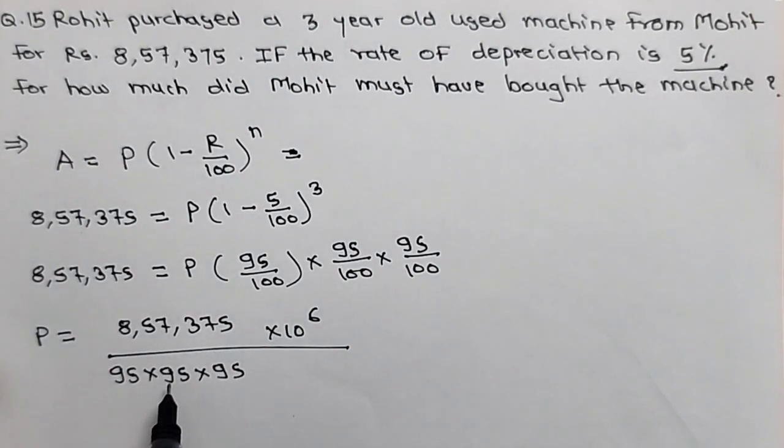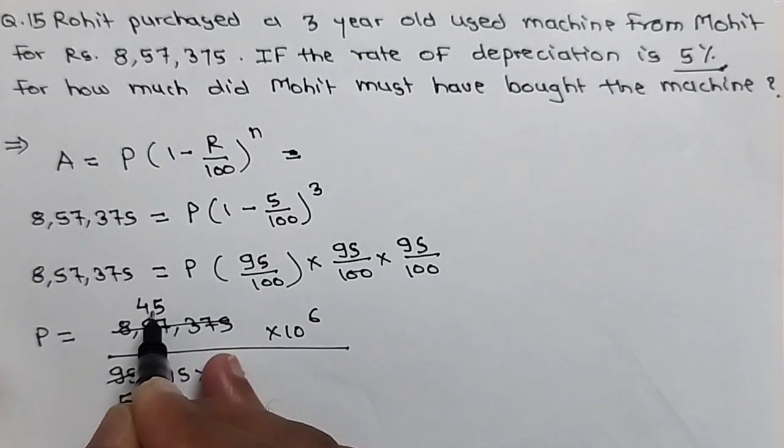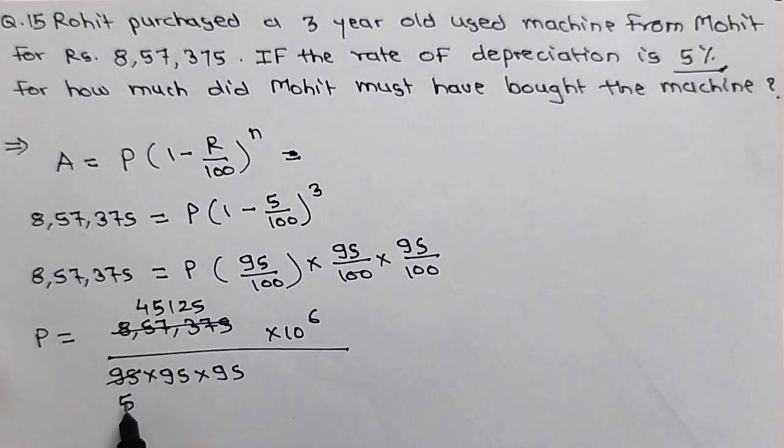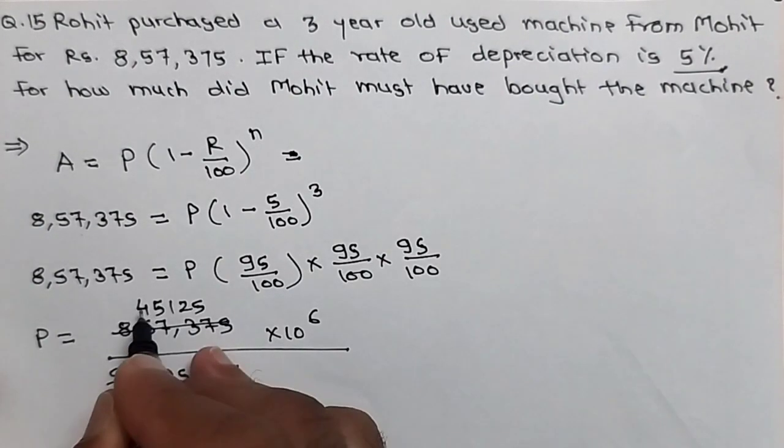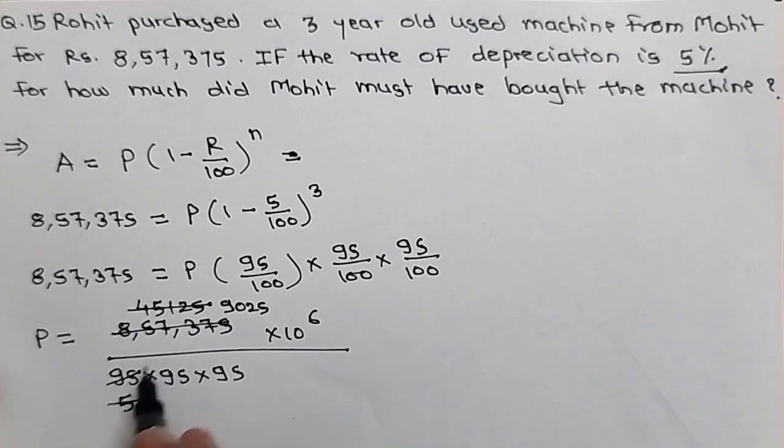Now to solve this, we know 95 means 19 into 5. So divide this 95 by 19 and this number by 19. Just divide, you will get here 5, and here you will get 45,125. Now I will tell you some trick. See here, again divide this 45,125 by 5. You will get here 5 on the 5, and just take the calculation, you will get here 9,025. Only divide this 95 there.